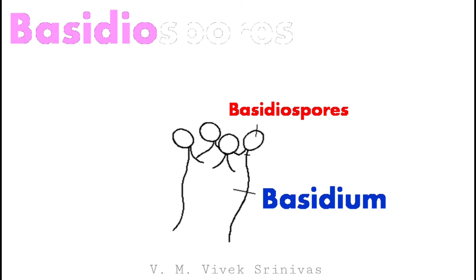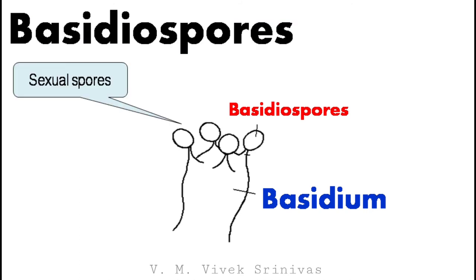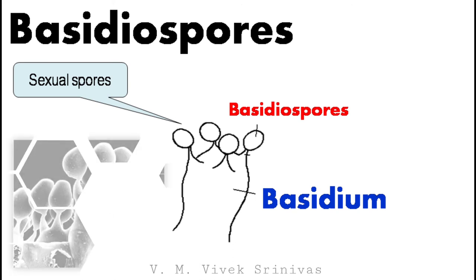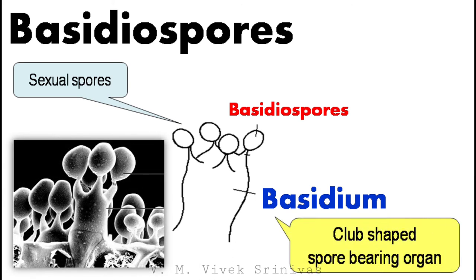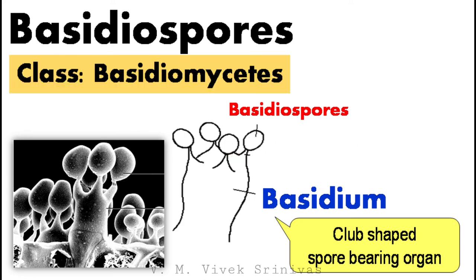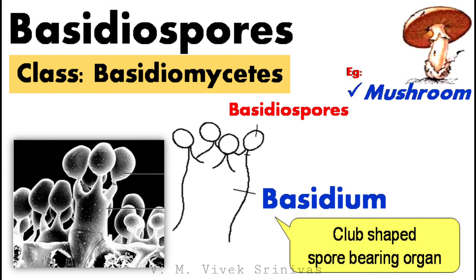Lastly, basidiospores. This is a sexual spore where the spores are formed over the basidium. Basidium is a club-shaped spore-bearing organ. Generally, these spores are present in four numbers in one basidium. Basidiomycetes is the class of fungi which produces this type of sexual spore. Mushroom is the example of fungi which produces basidiospores.